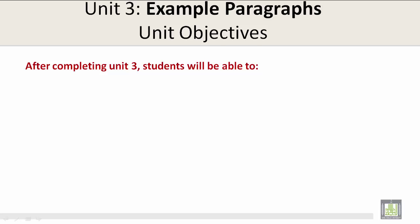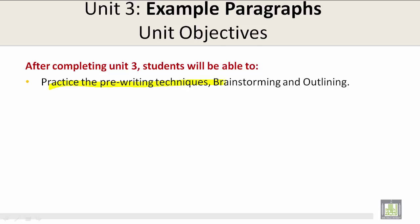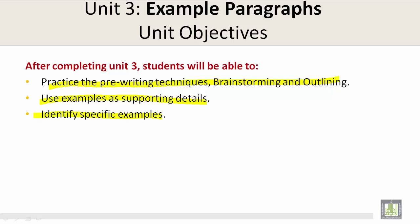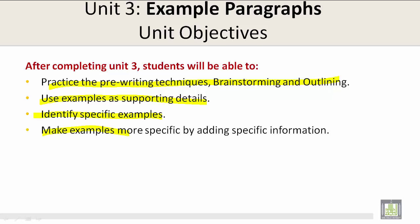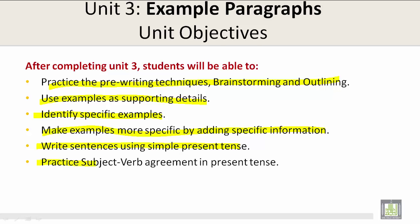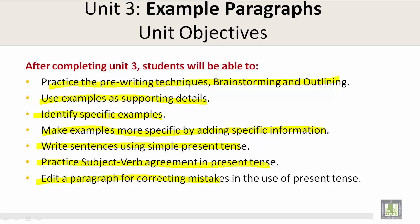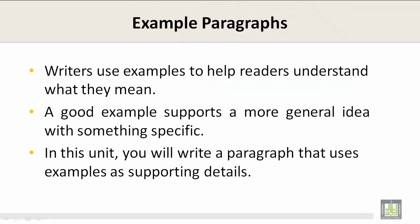After completing Unit 3, students will be able to: practice the pre-writing techniques of brainstorming and outlining; use examples as supporting details; identify specific examples; make examples more specific by adding specific information; write sentences using simple present tense; practice subject-verb agreement in present tense; and edit a paragraph for correcting mistakes in the use of present tense.